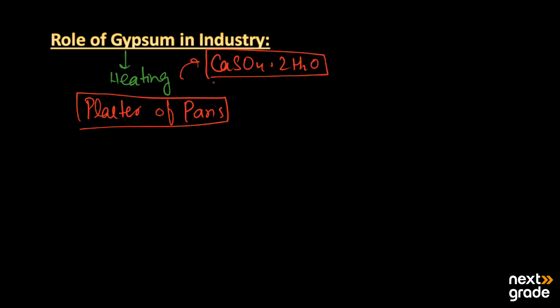Next we have the role of gypsum in industry. Gypsum, when it is heated carefully, upon heating is converted into a product known as Plaster of Paris. Here we have the product Plaster of Paris - how can we get it? We have to heat the gypsum.